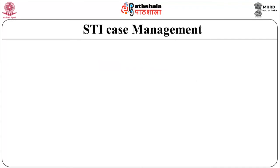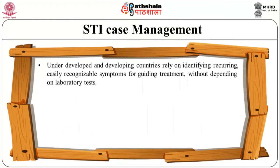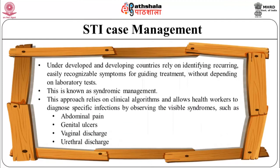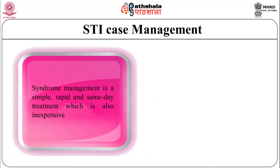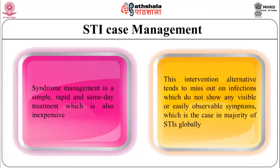STI case management in underdeveloped and developing countries relies on identifying recurring easily recognizable symptoms for guiding treatment without depending on laboratory tests — this is known as syndromic management. This approach relies on clinical algorithms and allows health workers to diagnose specific infections by observing visible syndromes such as abdominal pain, genital ulcers, vaginal discharge and urethral discharge. Syndromic management is a simple, rapid, same-day and inexpensive treatment. However, this intervention tends to miss infections which do not show any visible or easily observable symptoms, which is the case for the majority of STIs globally.